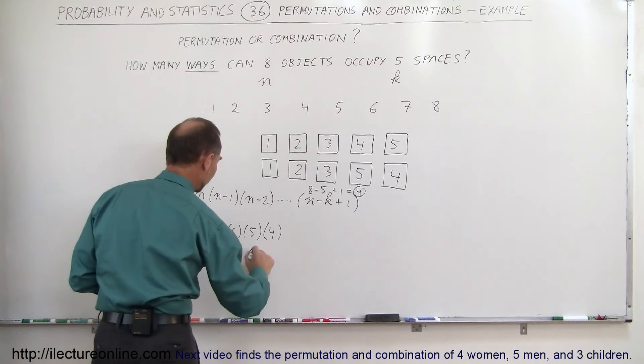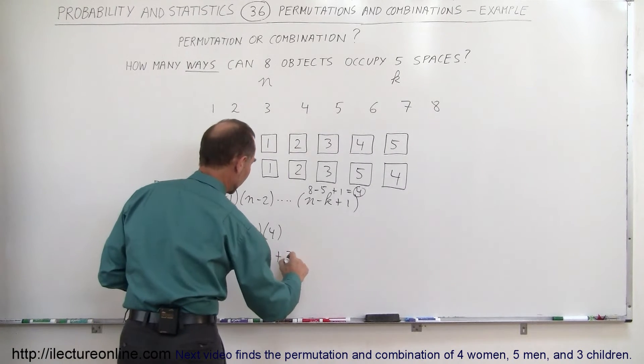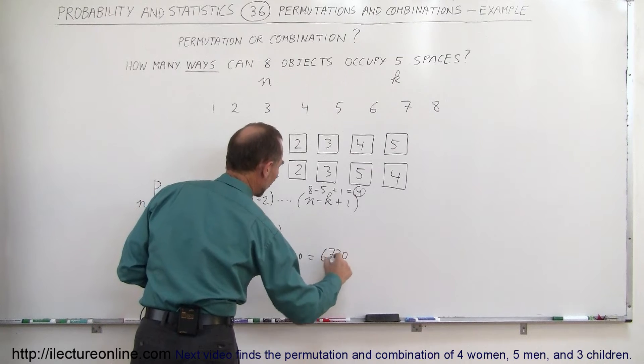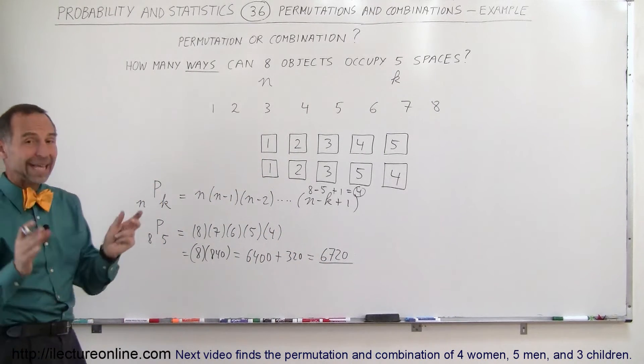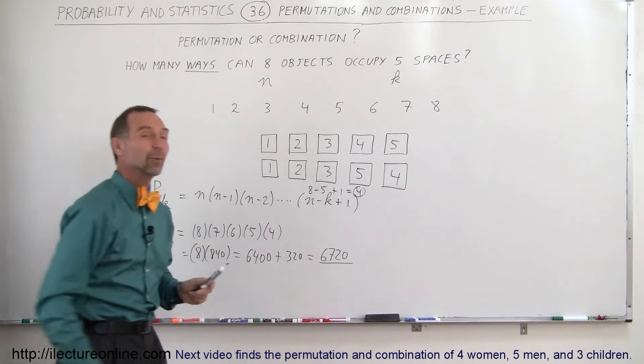8 times 8 is 64, that's 6400, plus 8 times 4 is 32 with a 0, that's 320, so this ends up with 6,720 different permutations. That's a huge number. Just with 8 numbers and 5 spaces, you can rearrange them in 6,720 different ways.